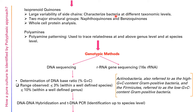After FAME, you proceed to isoprenoid quinones. The large variability of side chains characterizes bacteria at different taxonomic levels. The two major structural groups are naphthoquinones and benzoquinones. Whole protein analysis is done after that. Polyamine patterning is used to trace relatedness at and above the genus level and at the species level.